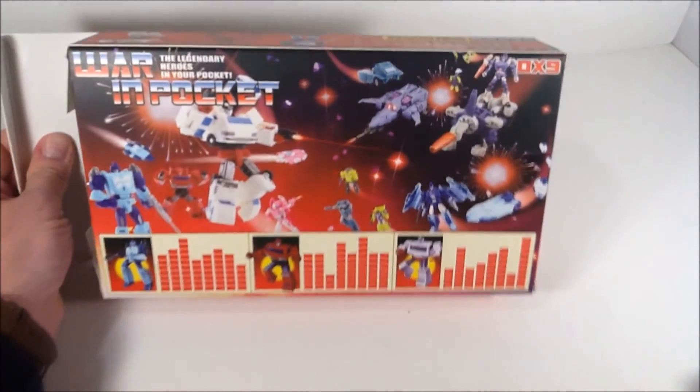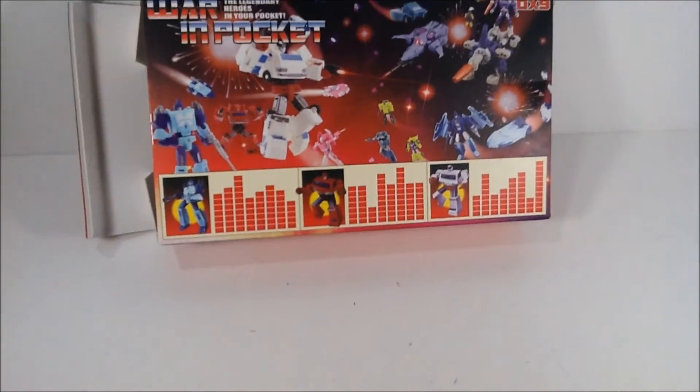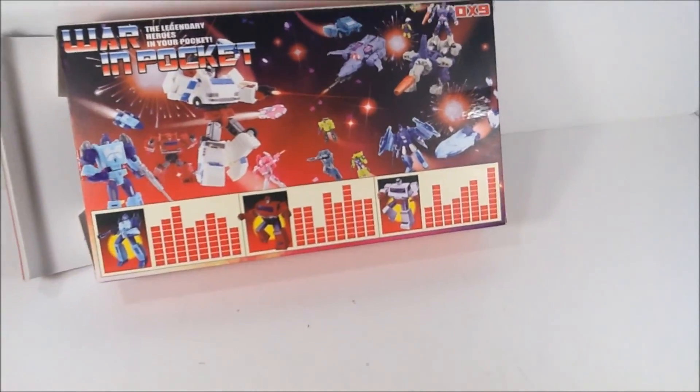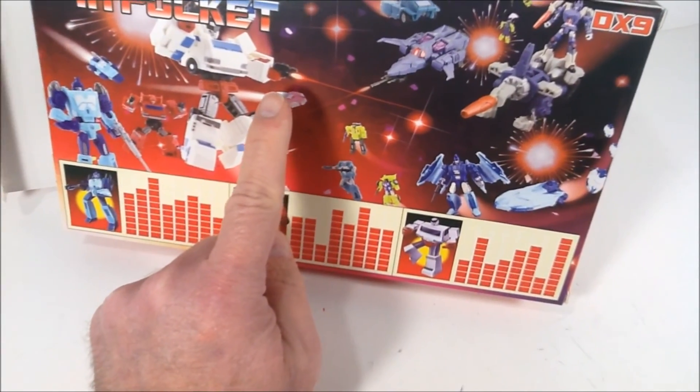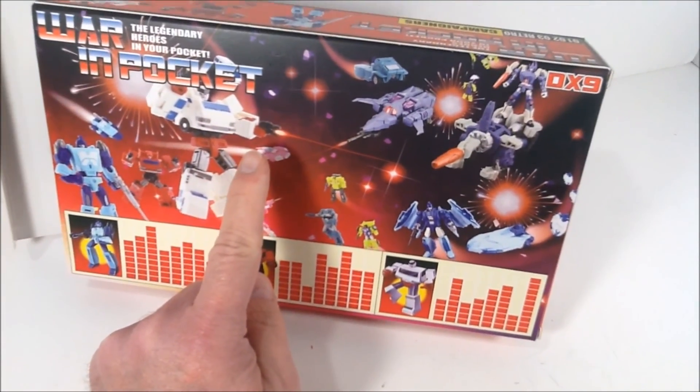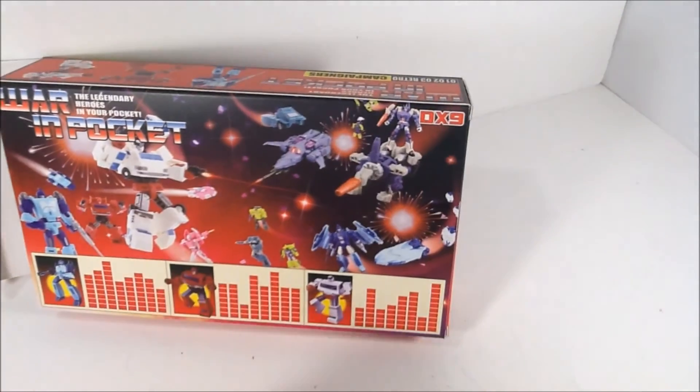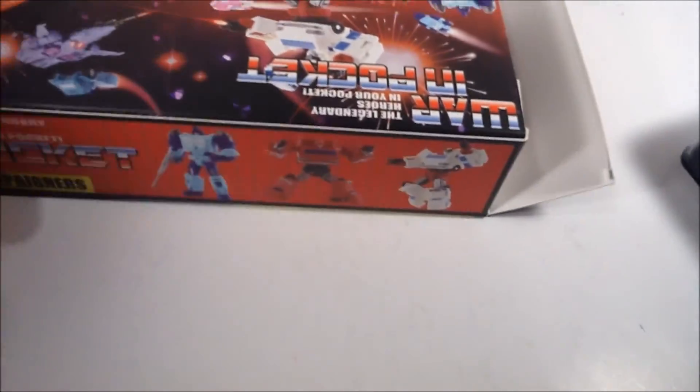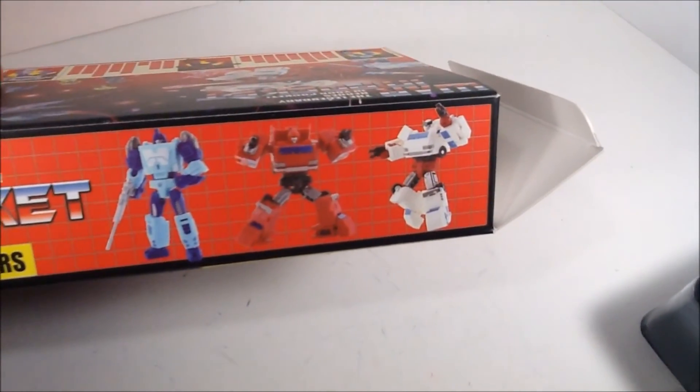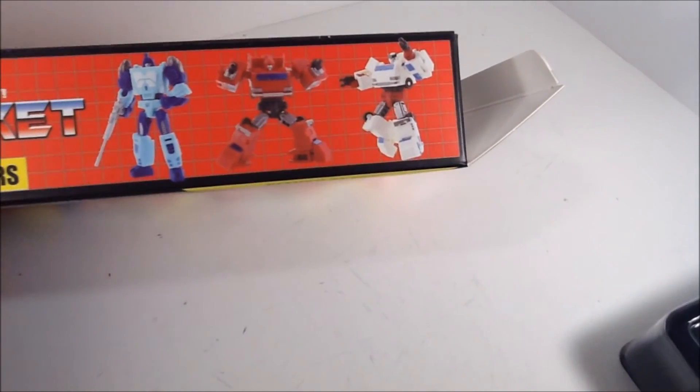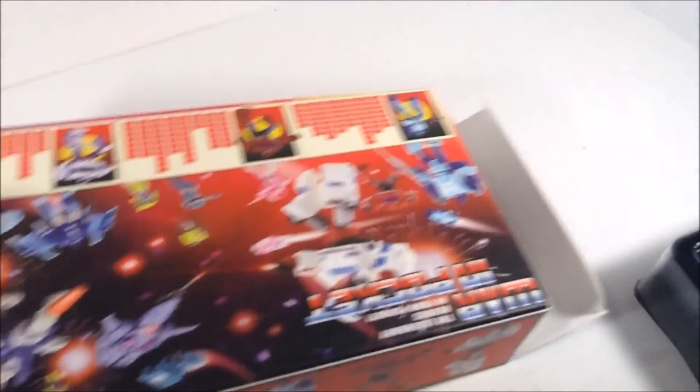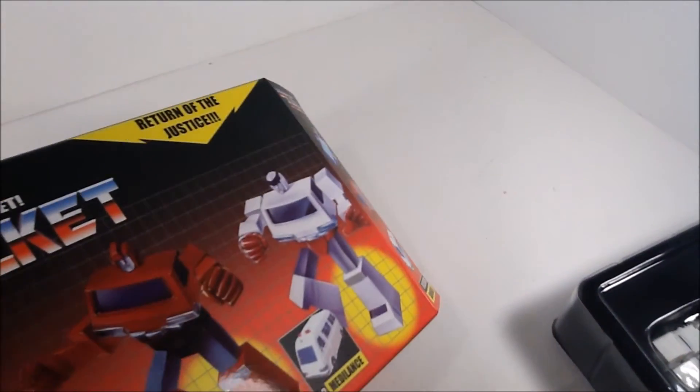And yeah, this box is a little bit misleading, and I'll tell you why. I don't know how well it comes off, but he has a weapon. He does not have a weapon in this box anywhere. On this side of the box, it shows our good Ironhide and Ratchet holding two different weapons. Yeah, they don't come with weapons. Let me just put that out there. They don't come with weapons.